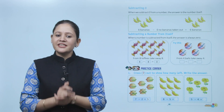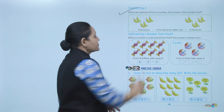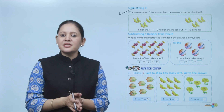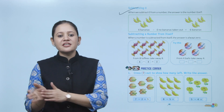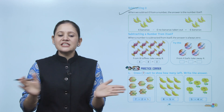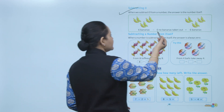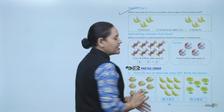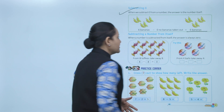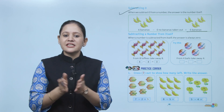Next is subtracting 0. When we subtract 0 from a number, the answer is the number itself. 0 means nothing — nothing is getting subtracted. So total 6 bananas, 0 means no banana taken away, that is equal to 6 bananas. Clear.